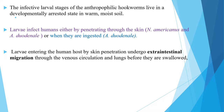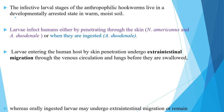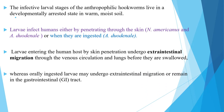Larvae entering the human host by skin penetration undergo extraintestinal migration through the venous circulation and the lungs before they are swallowed, whereas orally ingested larvae may undergo extraintestinal migration or remain in the gastrointestinal tract.